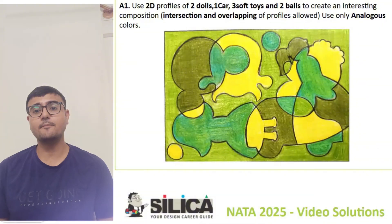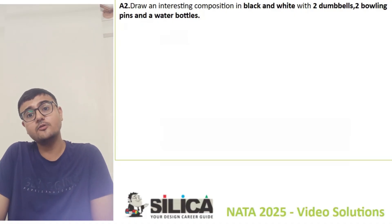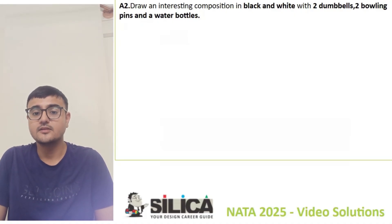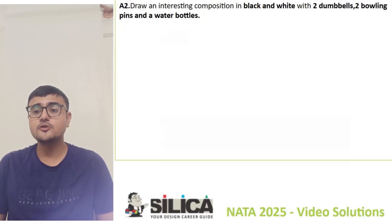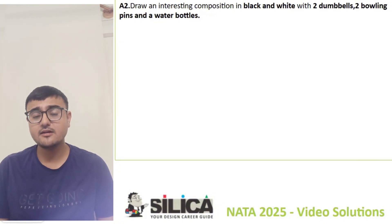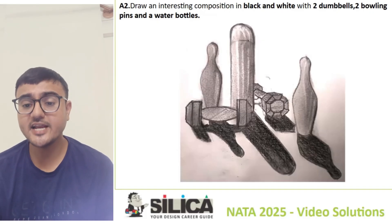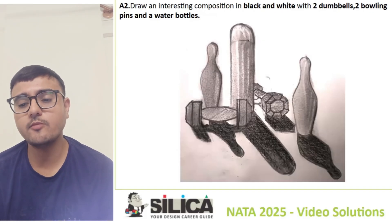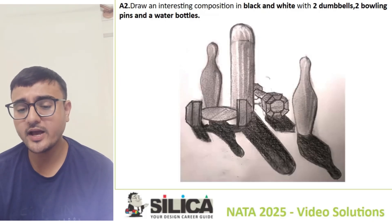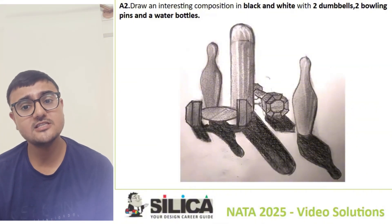The A2 question is about 3D composition using black and white medium. You have to create a composition using two dumbbells, two bowling pins, and a water bottle — five objects total. You need to arrange them in a balanced manner so it's easy to construct a shadow. In the composition, the central focus is on the water bottle and the two dumbbells.